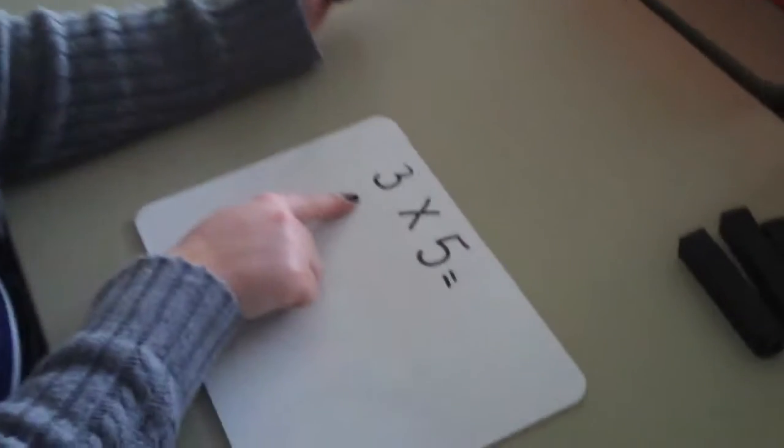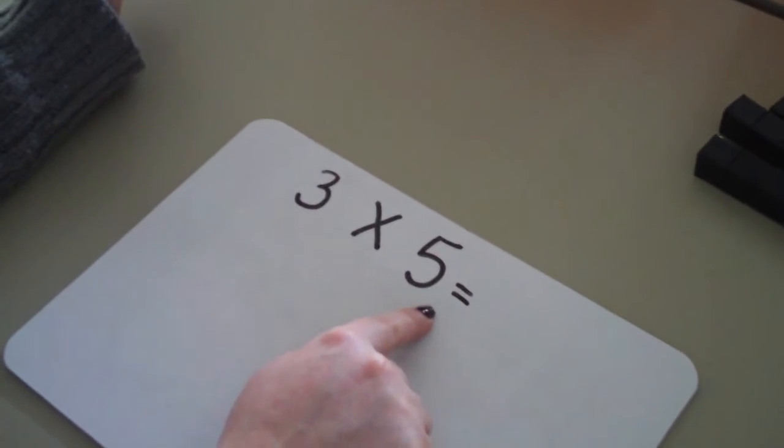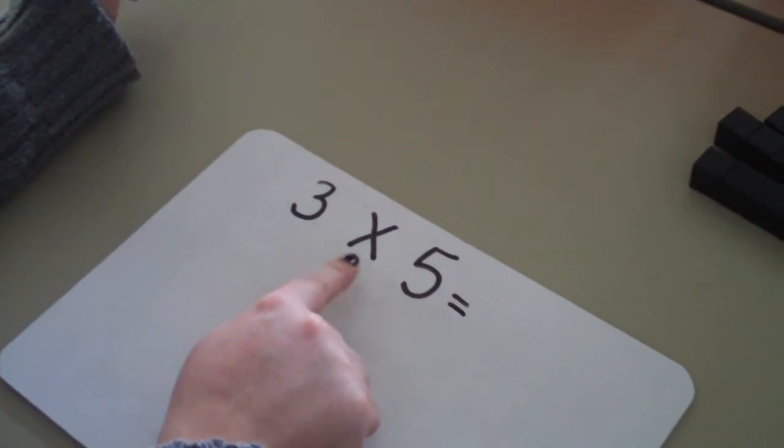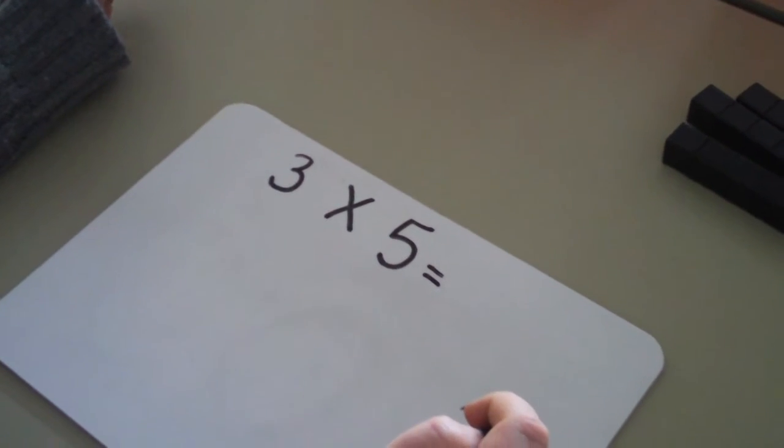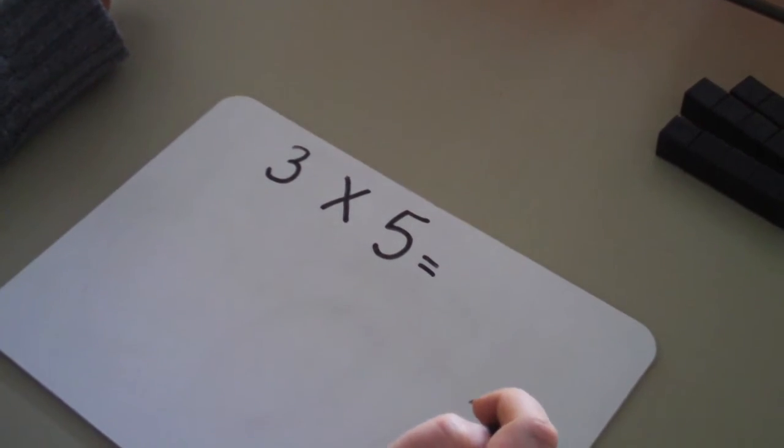Let's have a look at multiplication. 3 times 5 is the same as 3 lots of 5. So I need to get 3 groups and I need to have 5 cubes in each group.